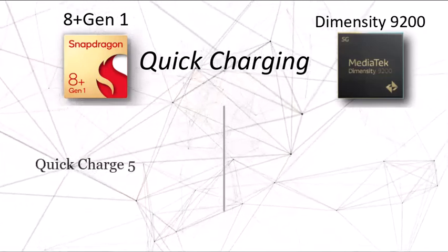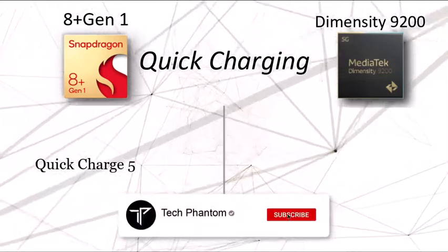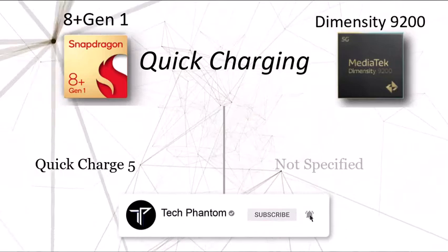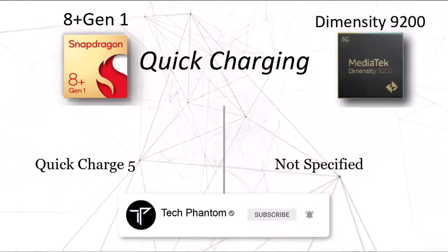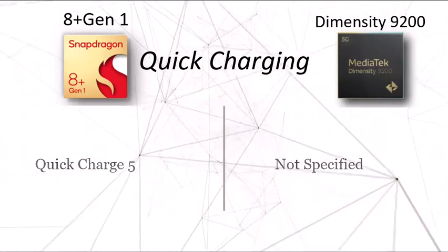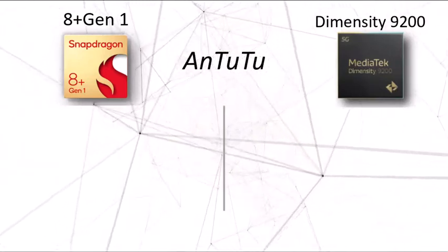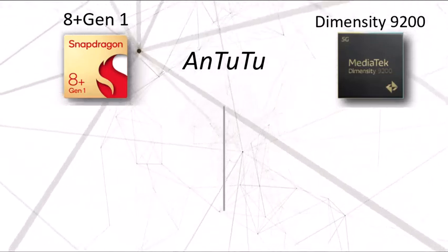For quick charging, the Snapdragon 8 Plus Gen 1 comes with Quick Charge 5. The Dimensity 9200's quick charge standard has not been officially specified, but it is reported to support fast charging up to 210 watts.